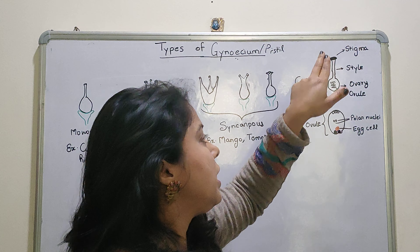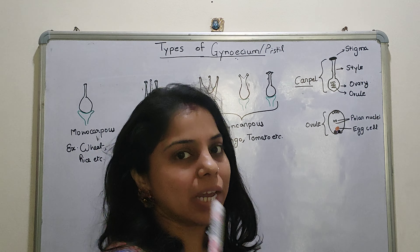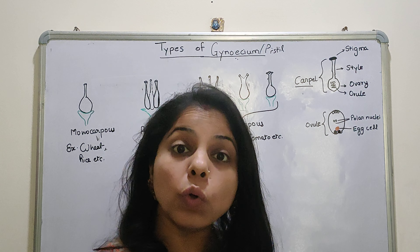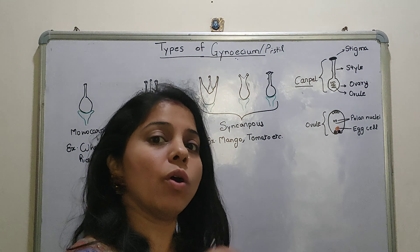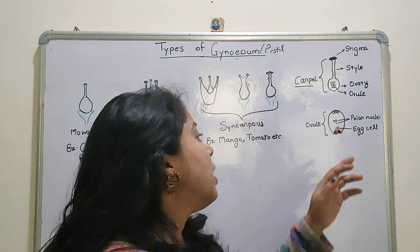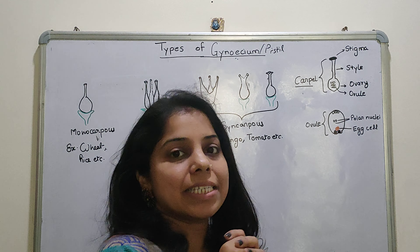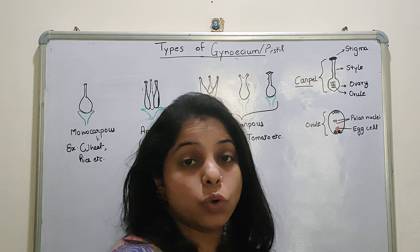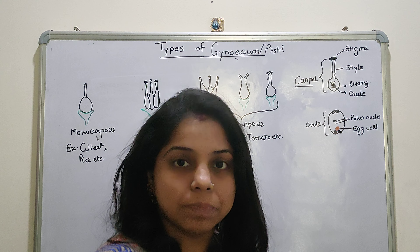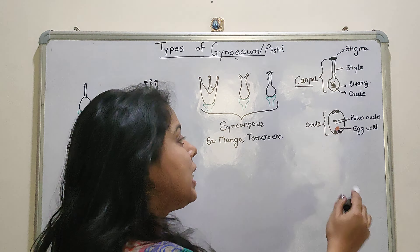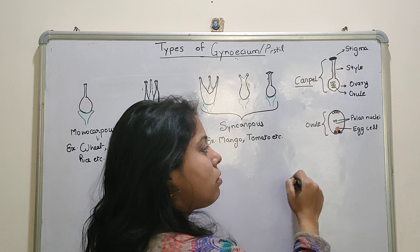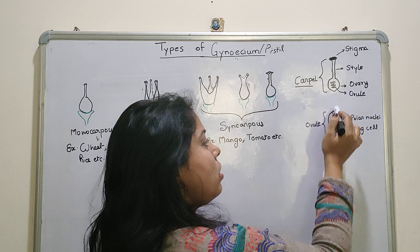Gynoecium is also called the Pistil. Pistil means the collection of carpels. Carpel is the unit structure of gynoecium. If we differentiate the different parts, the top platform is called the Stigma, the tube connecting it is the Style, and the swollen part at the bottom is called the Ovary.